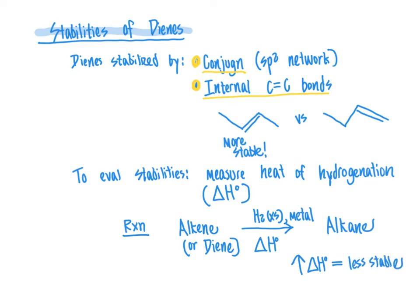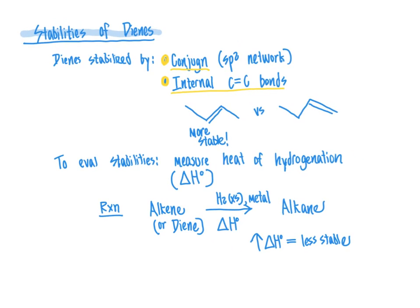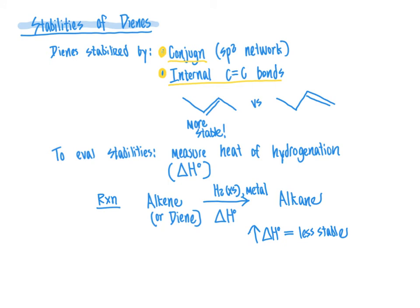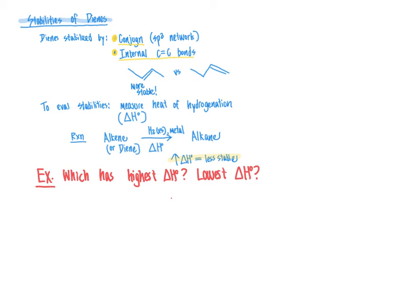If we were to carry this experiment out for a series of different types of alkenes — molecules with just one alkene group, or conjugated versus non-conjugated molecules, or molecules with internal versus external carbon-carbon double bonds — we could piece together general trends in relative stabilities from the heats of hydrogenation. Keeping in mind that the larger the delta H value, the less stable the compound is going to be, let's look at an example problem to sort out how to interpret this information.